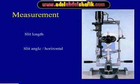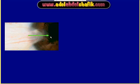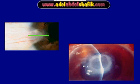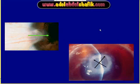The slit lamp can be used for measurement. We can know exactly the length of the slit light and also the angle of the slit light from the horizontal compared to the vertical meridian. For example, if there is a foreign body you can tell exactly how many millimeters it is into the cornea. If you get a corneal ulcer and you are following the patient, you can measure the two axes of the ulcer in millimeters, so during follow-up you can tell whether the ulcer is improving or not.